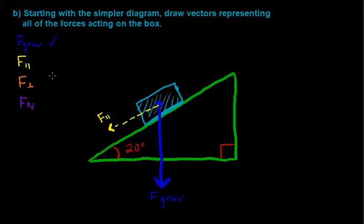Then we move on to the perpendicular component. Of course in part A, we talked about this vector pointing into the ramp.